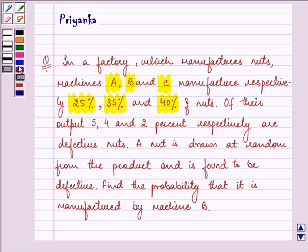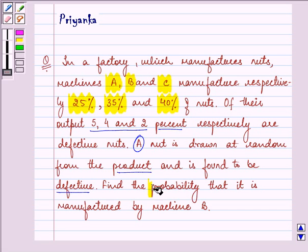Of their output, 5, 4 and 2% respectively are defective nuts. A nut is drawn at random from the product and is found to be defective. We need to find the probability that it is manufactured by machine B.